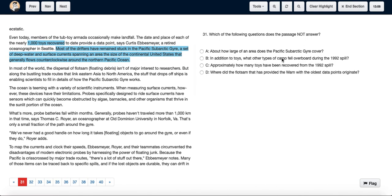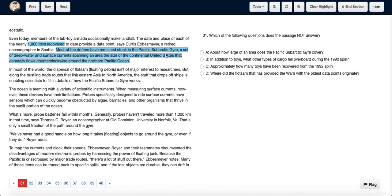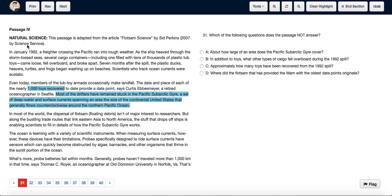Now option B: in addition to toys, what other types of cargo fell overboard during the 1992 spill? We see in the first paragraph in 1992, as the ship heaved through the storm door seas, several cargo containers including one